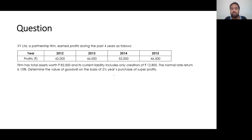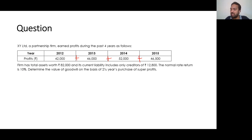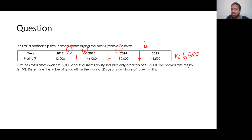Goodwill = Super Profit × Number of Years of Purchase. To calculate super profit, we first need the average maintainable profit. So: 42,000 + 46,000 + 52,000 + 46,500 = 1,86,500 total profit. Divided by 4 years, the average future maintainable profit = Rs. 46,625.